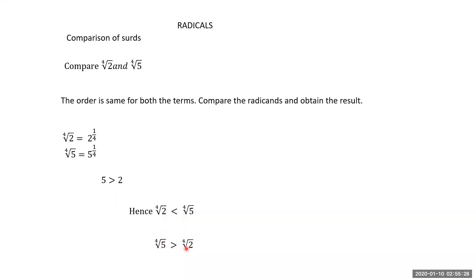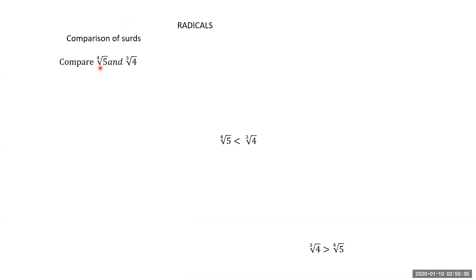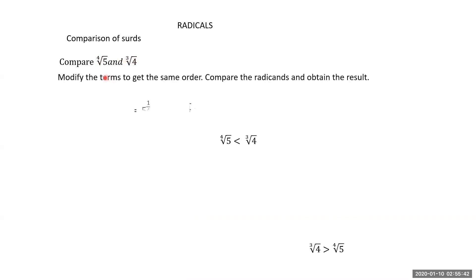Now compare the fourth root of 5 and the cube root of 4. The orders are not the same — one is 4, the other is 3 — so we must modify the terms to get the same order. Fourth root of 5 = 5 to the power 1/4; cube root of 4 = 4 to the power 1/3. Take the LCM of the denominators 4 and 3, which is 12. Bring both denominators to 12.